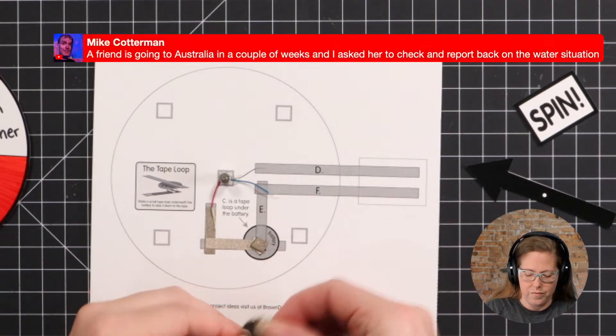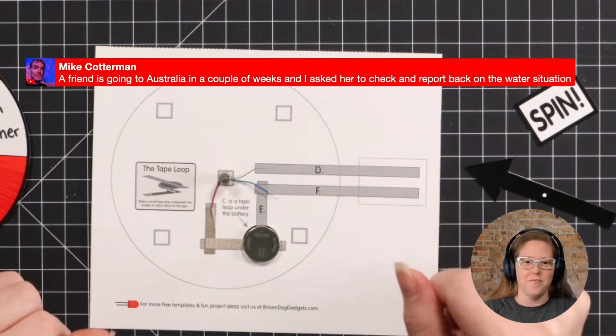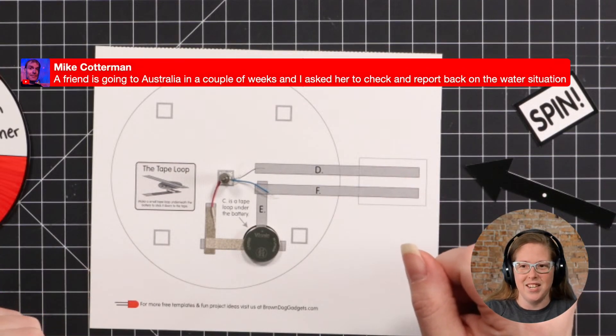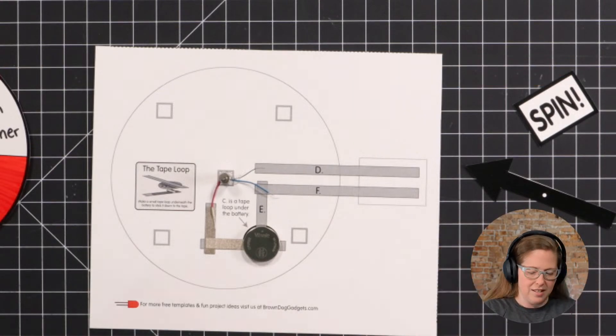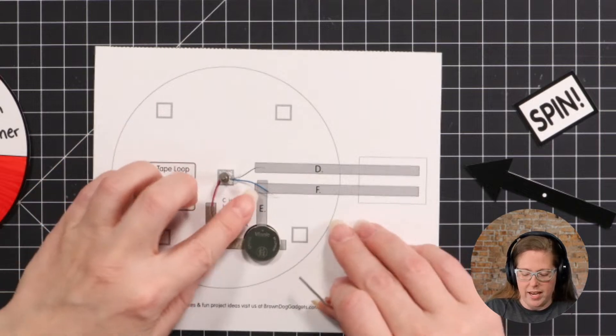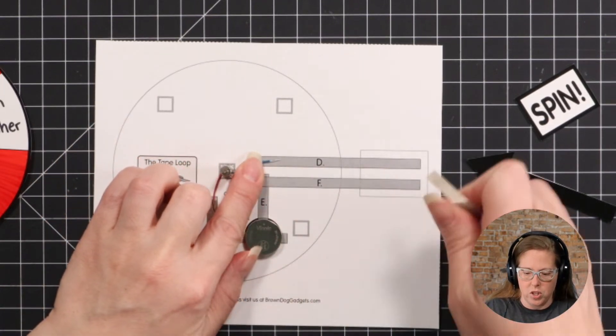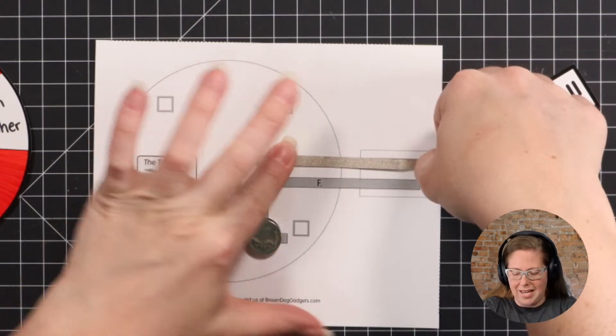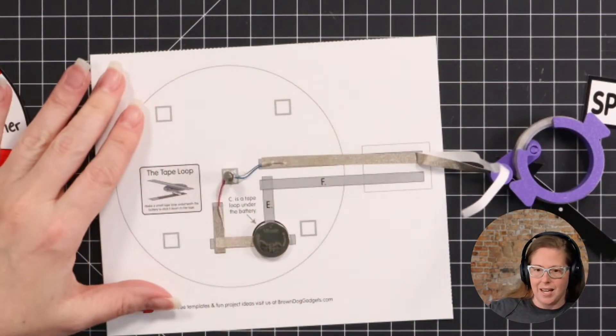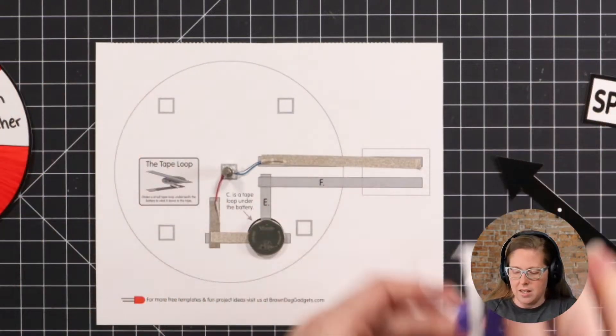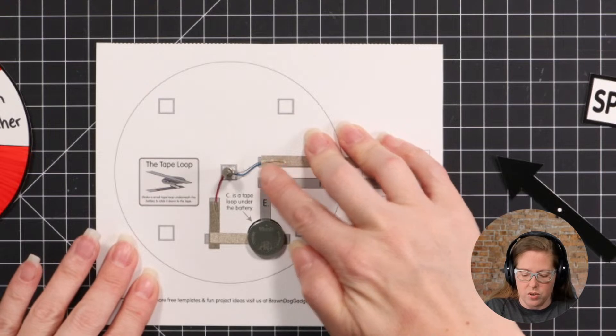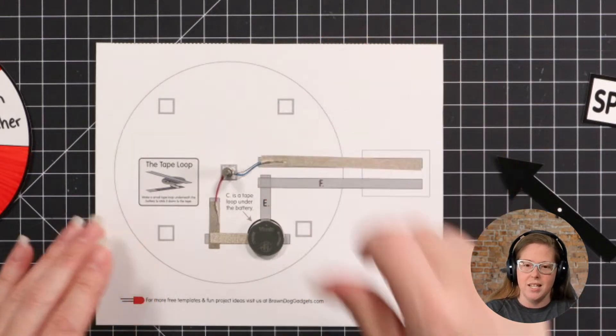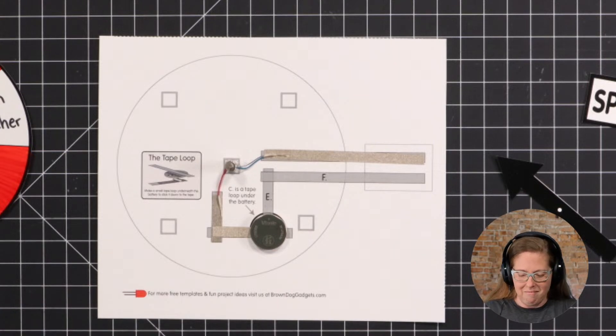I'm actually going to use a piece of maker tape and roll it up into what we call our tape loop, so it's got the sticky side out just like you would the back of a poster. And I'll put that right at the end of this pathway here, and that is what's going to hold our battery in place.